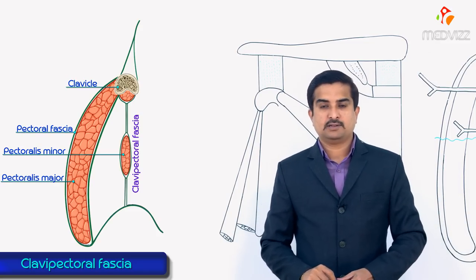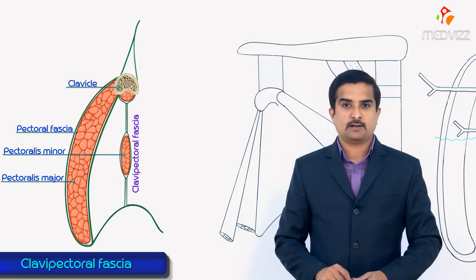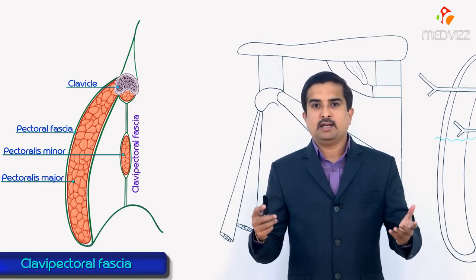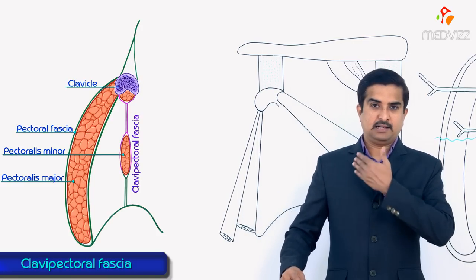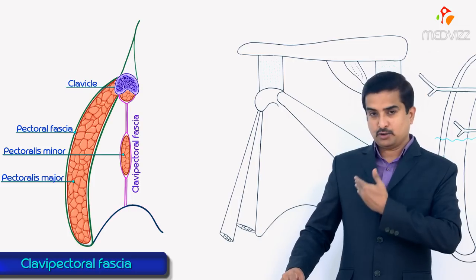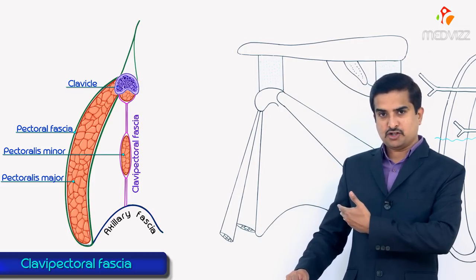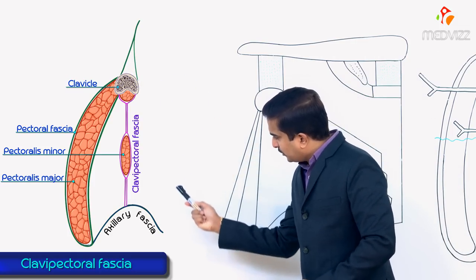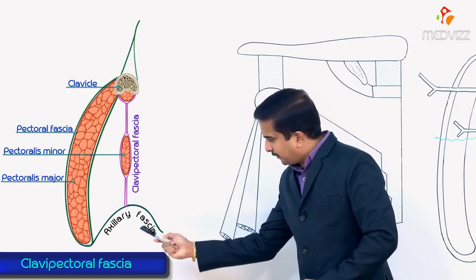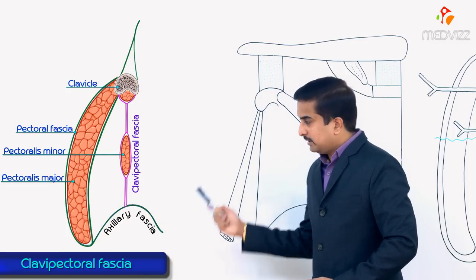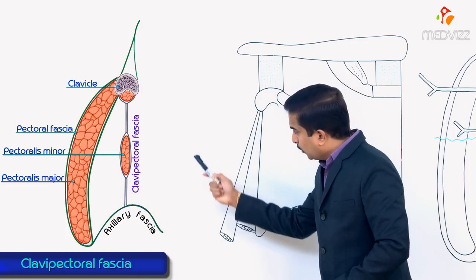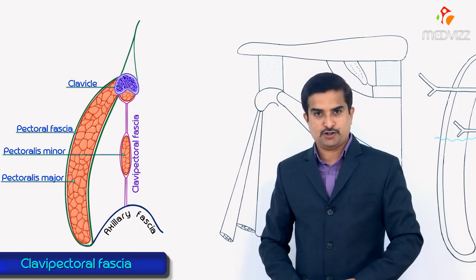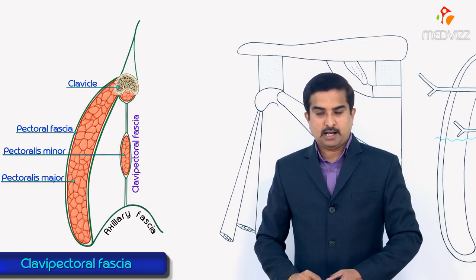Vertically, the clavipectoral fascia extends from the clavicle above to the axillary fascia below. This is the vertical extent of the clavipectoral fascia.